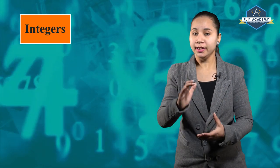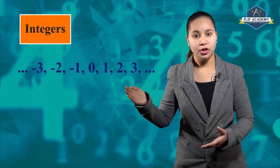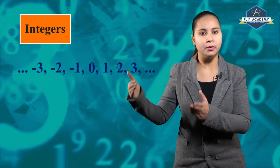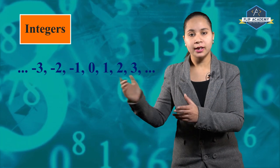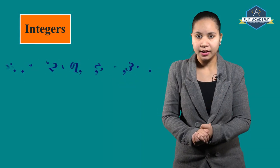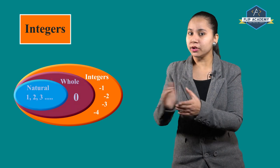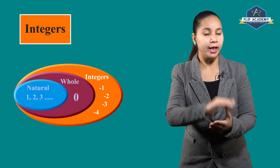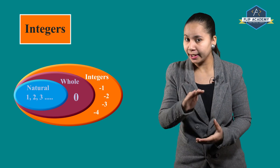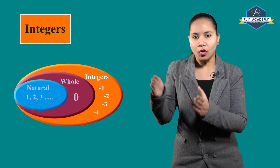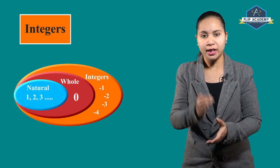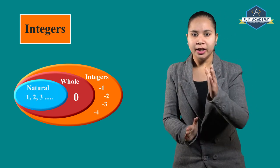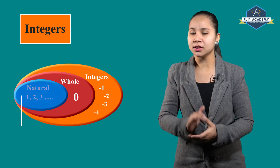What are integers? Integers include all negative numbers, 0, and positive numbers. Yani, all positive numbers, negative numbers, and zero are called integers. The group of zero and positive integers is called whole numbers. And all positive numbers are known as natural numbers.